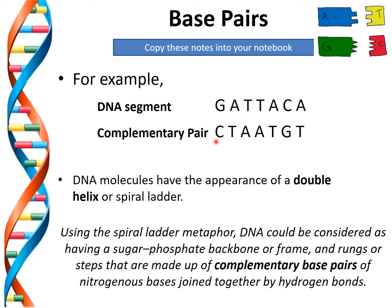To complete the complementary strand of DNA that bonds with the original strand, we would have: G pairs with C, A with T, T with A, T with A, A with T, C with G, and A with T.